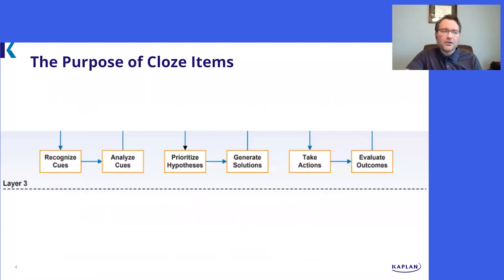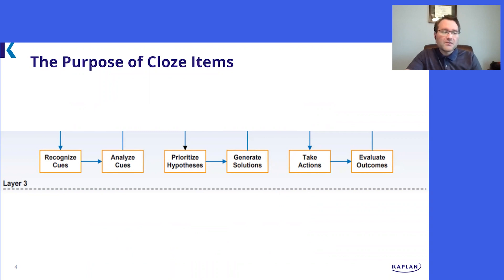In a closed item, layer three outlines the cognitive aspects of clinical decision making that are directly measurable and are the basis for the development of NGN items and case studies for the NCLEX exam. The cognitive skills range from cue recognition to the evaluation of outcomes.